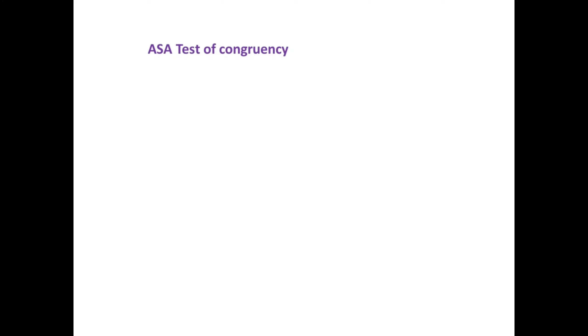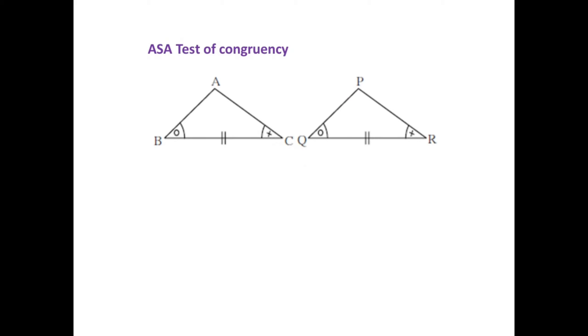There are some tests by which we can identify whether two triangles are congruent or not. The first is the ASA test — the Angle Side Angle test of congruency. Consider triangles ABC and PQR, where congruent angles and sides are marked with identical signs. Here angle B is congruent to angle Q, and angle C is congruent to angle R.